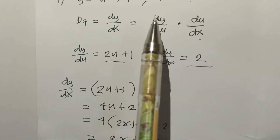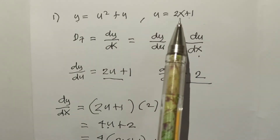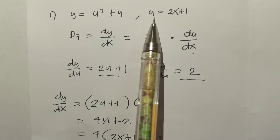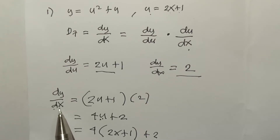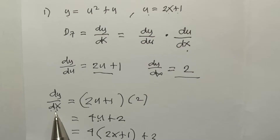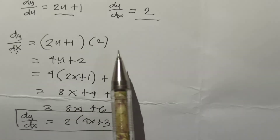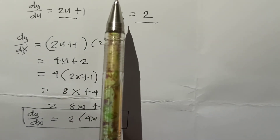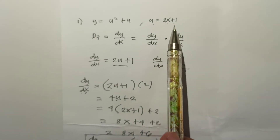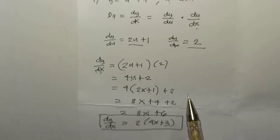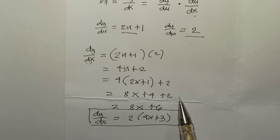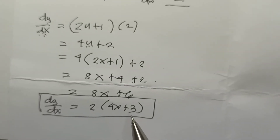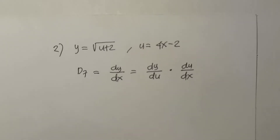To summarize: first take the derivative of y, then the derivative of u, multiply them, and substitute the value for u. We substitute because dy/dx requires everything on the right side to be in terms of x. Substituting u = 2x + 1 gives 4(2x + 1) + 2 = 8x + 4 + 2, so dy/dx = 2(4x + 3).